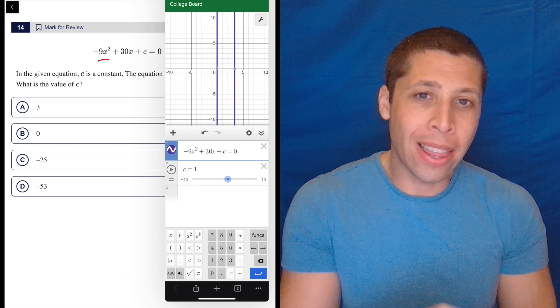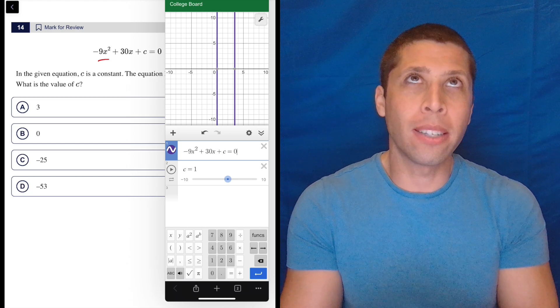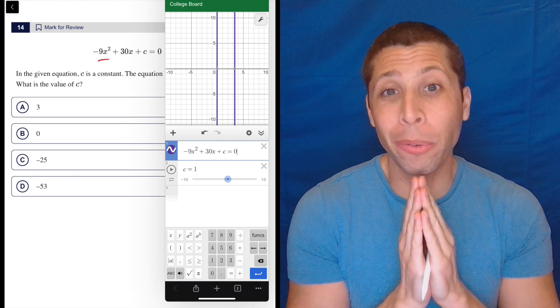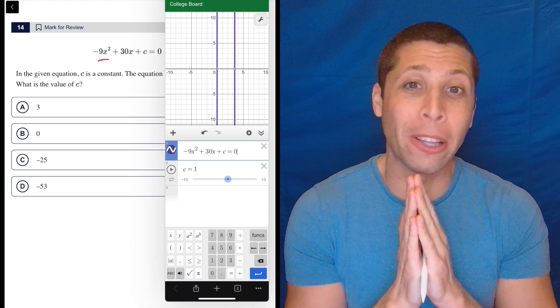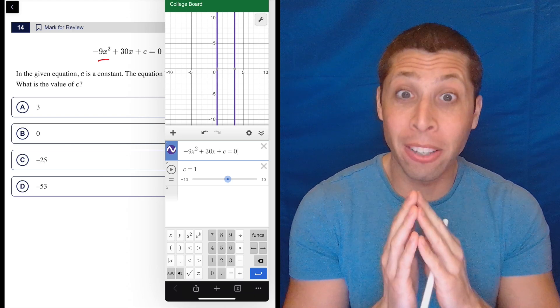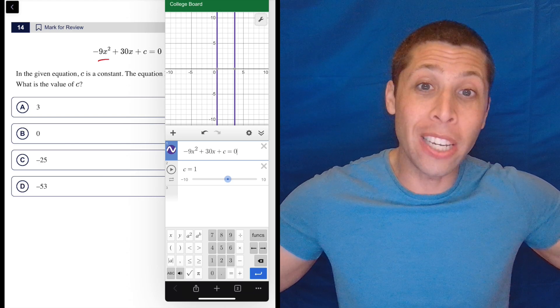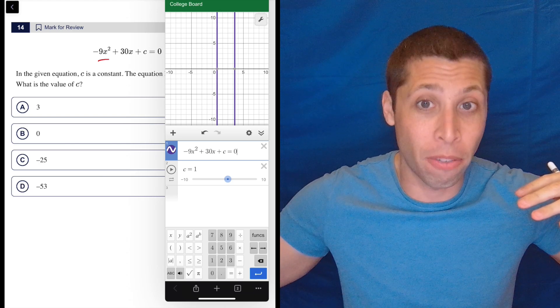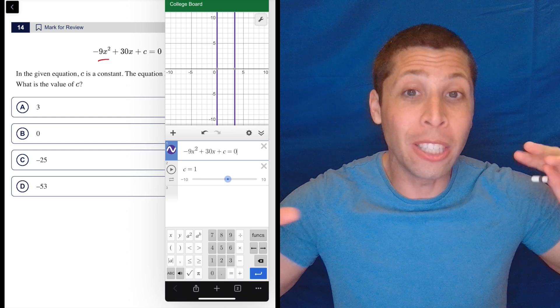But I'm worried about using that method on this because what if the two lines are really, really close together? But because I'm zoomed out, they look like one line, right? Or what if the lines are really far apart and I don't see one of the lines because it's off the screen, it's off the zoom. So I don't want to deal with that uncertainty.